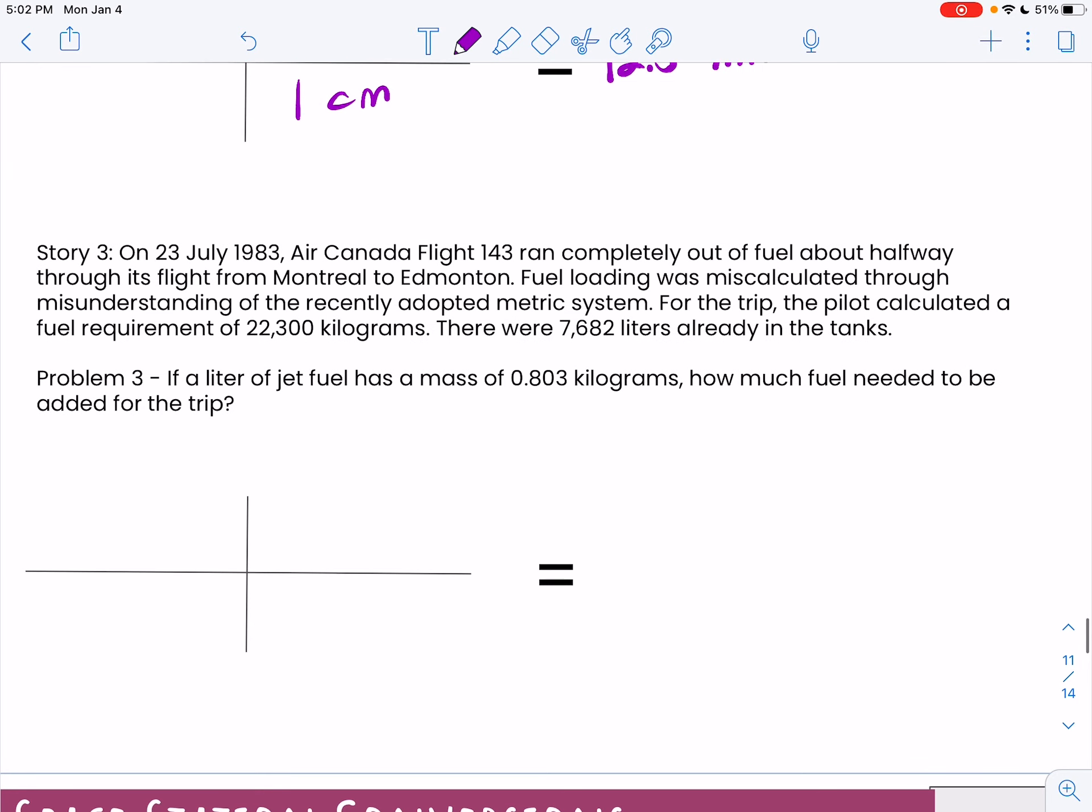Number three: Air Canada Flight 143 ran out of fuel about halfway through its flight from Montreal to Edmonton. Fuel loading was miscalculated through a misunderstanding of recently adopted metric system, again an English to metric problem. For the trip, the pilot calculated a requirement of 22,300 kilograms of fuel. So that's what we've got: 22,300 kilograms. If a liter of jet fuel has a mass of 0.803 kilograms, there's my similar unit so I know that's going to go on the bottom.